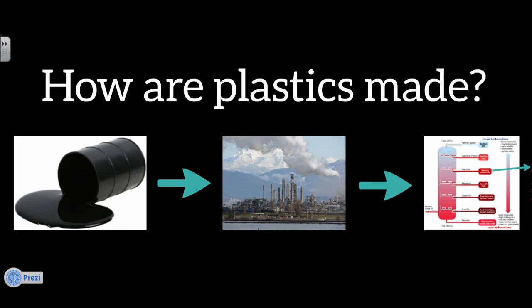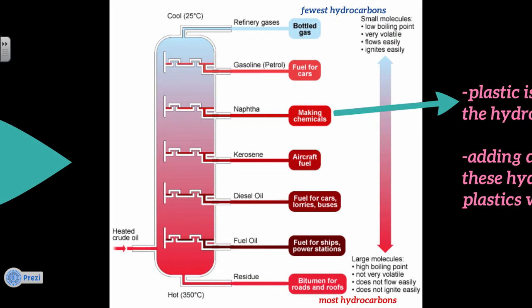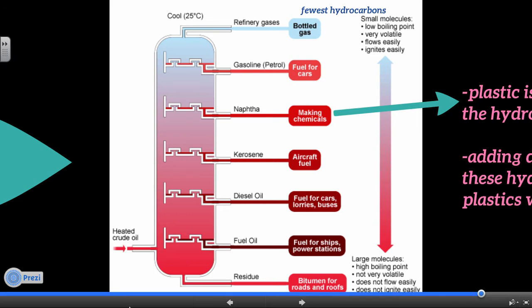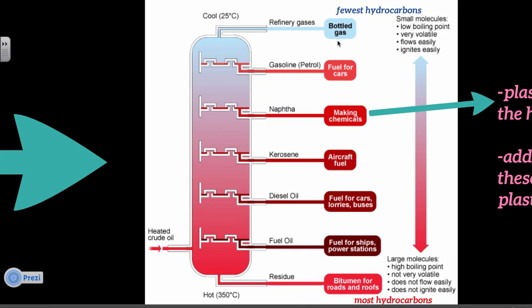They're made from oil, which is then sent to the oil refinery. At the oil refinery, a process called fractional distillation takes place. So in fractional distillation, the oil is separated into all of its hydrocarbons. So the most hydrocarbons are settled down at the bottom. The fewest hydrocarbons rise to the top. So up top, you get things like gasoline and gases.